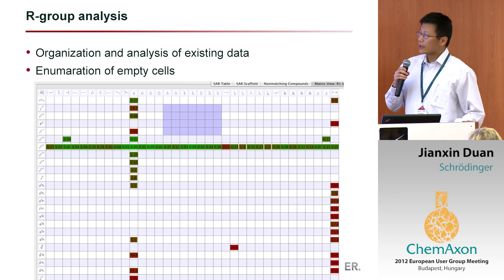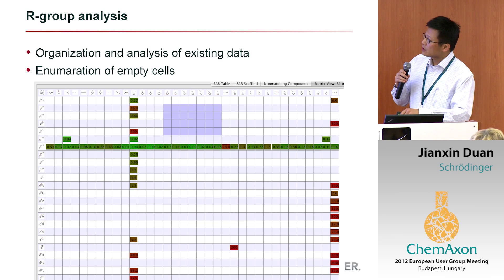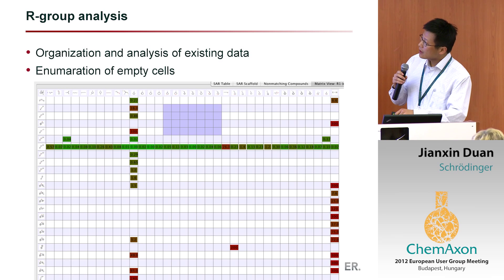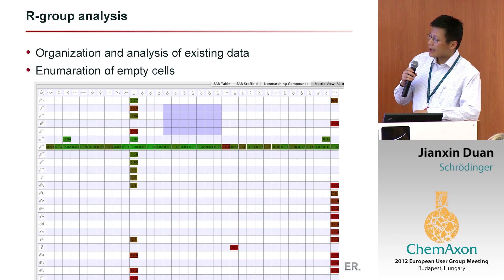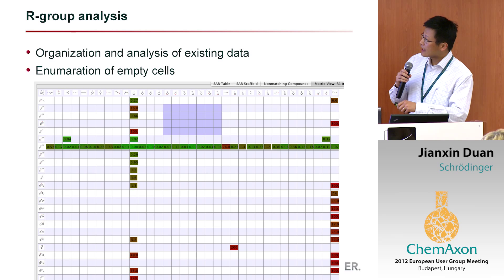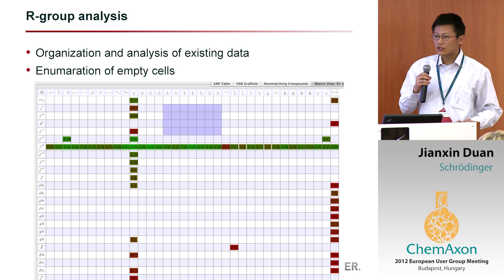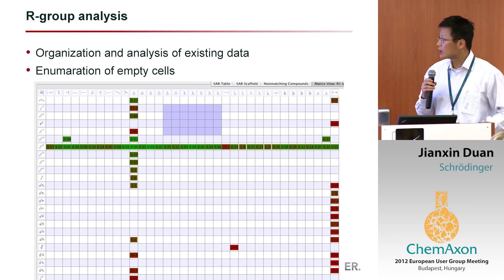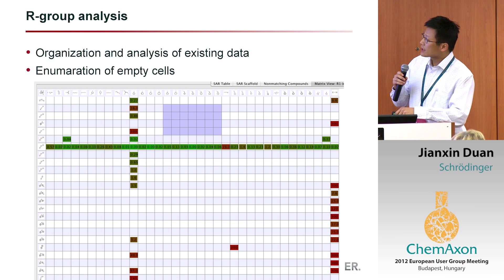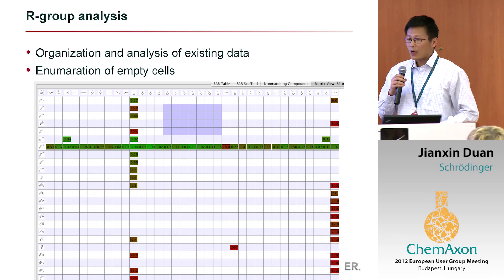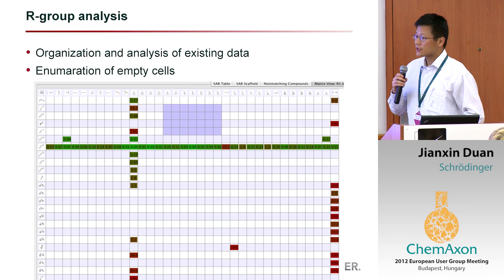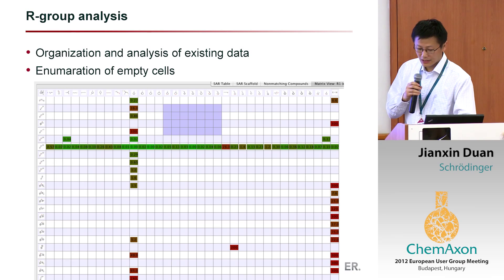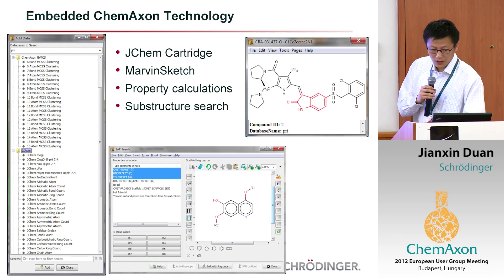This is for SAR — suppose you have a core structure with R groups. You can quickly visualize which compounds you have and what their activities are. With the colors, it's easy to pick out hot spots or cold spots. You can also select the empty cells and say you want to generate in-silico molecules for those combinations, and explore those.